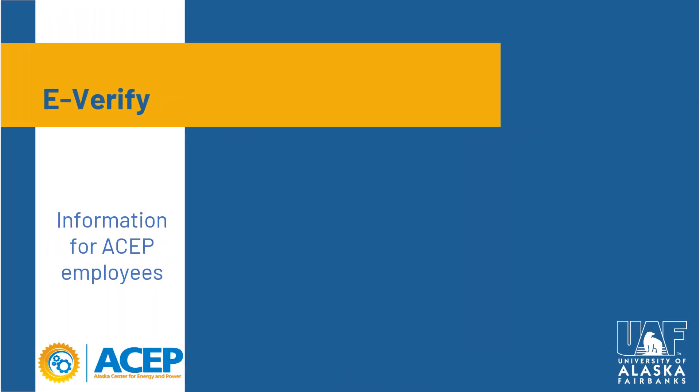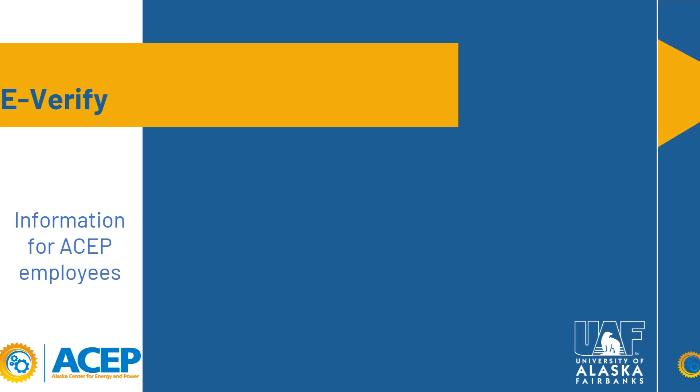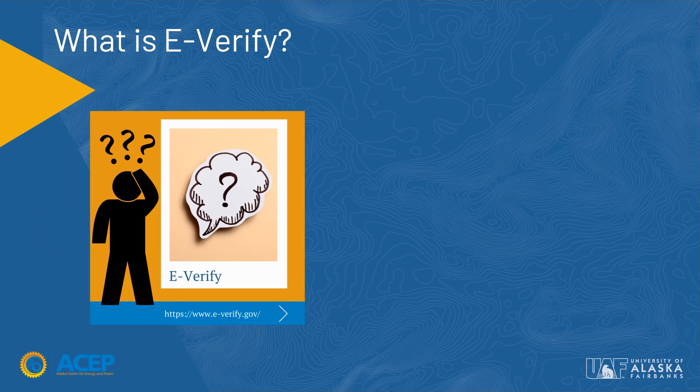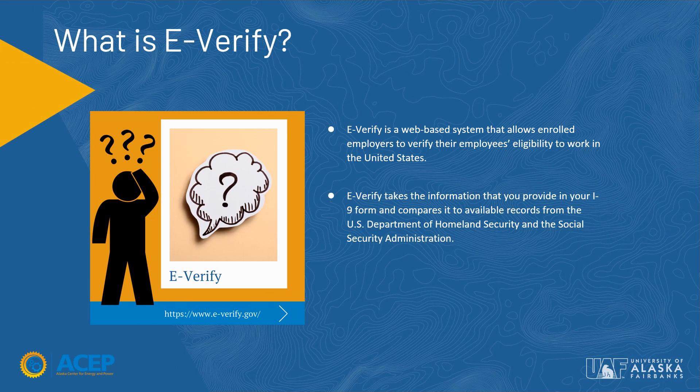ASEP is an E-Verify organization. Participation in E-Verify allows for more grant funding opportunities. E-Verify is a web-based system that allows enrolled employers to verify their employees' eligibility to work in the United States. E-Verify takes the information that you provide in your I-9 form and compares it to available records from the U.S. Department of Homeland Security and the Social Security Administration. These records help us determine if an employee is eligible to work within the United States.